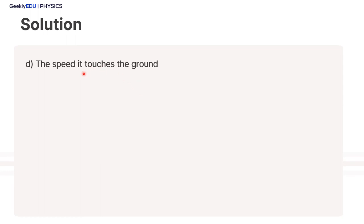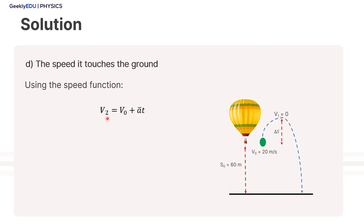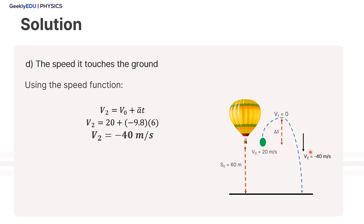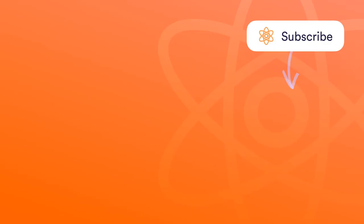For letter D, the speed at which the sandbag touches the ground: using the speed function for V2 and adding the values, V2 equals negative 40 meters per second. The negative sign shows that the sandbag is going down — the opposite direction it was going before. So that's it for today. Thank you very much. Now that you understand the basics, we can move on to more advanced topics.